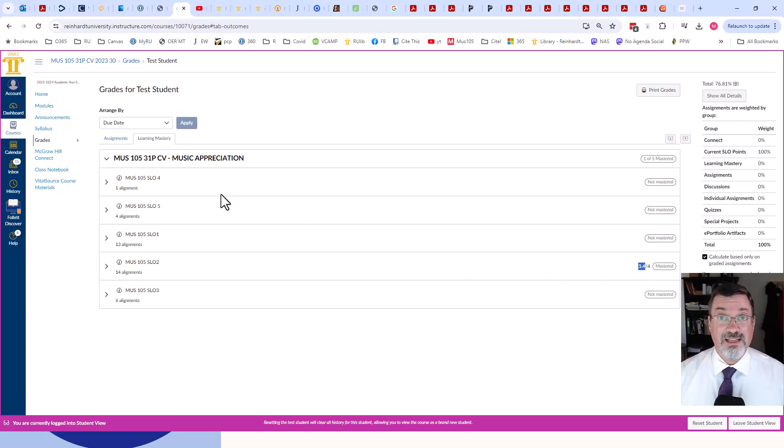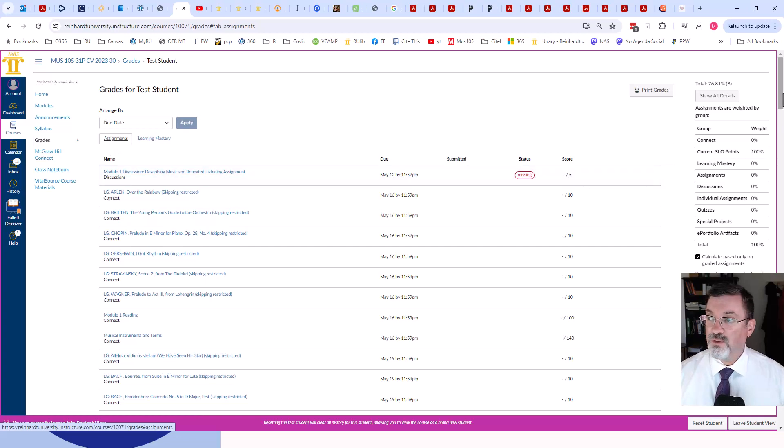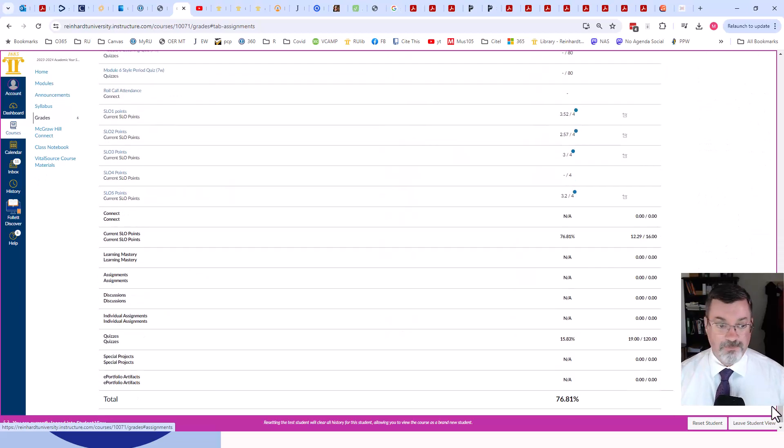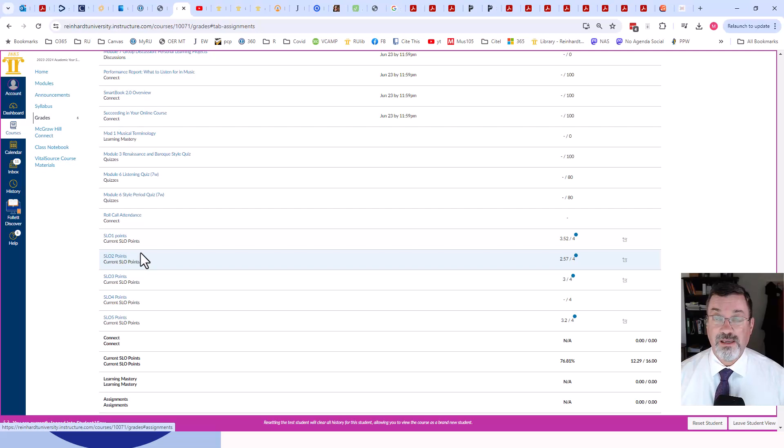So, what I've done is in the Traditional Gradebook, which is under this tab, Assignments, if you'll scroll all the way to the bottom, I have exported the Learning Mastery Gradebook, and I've put in your current points as they're calculated there. Okay, so for SLO 1, you got 3.5. That is an excellent score. That means you're getting mostly 3s and 4s on using the correct terminology. Anything 3 and above is an excellent score.